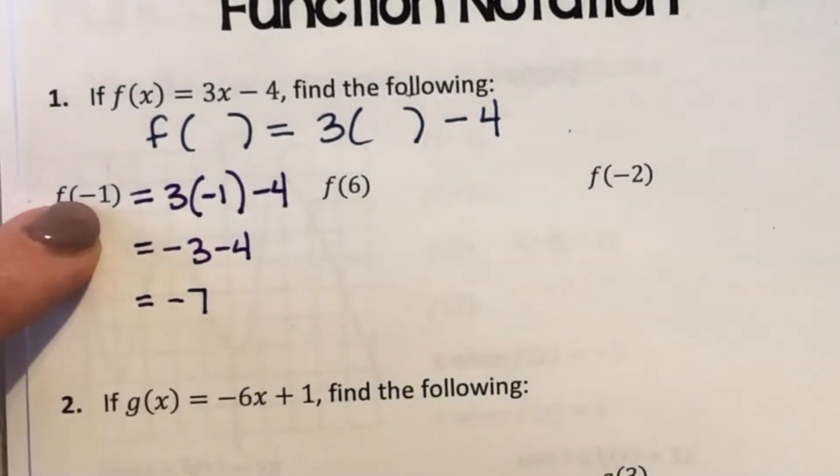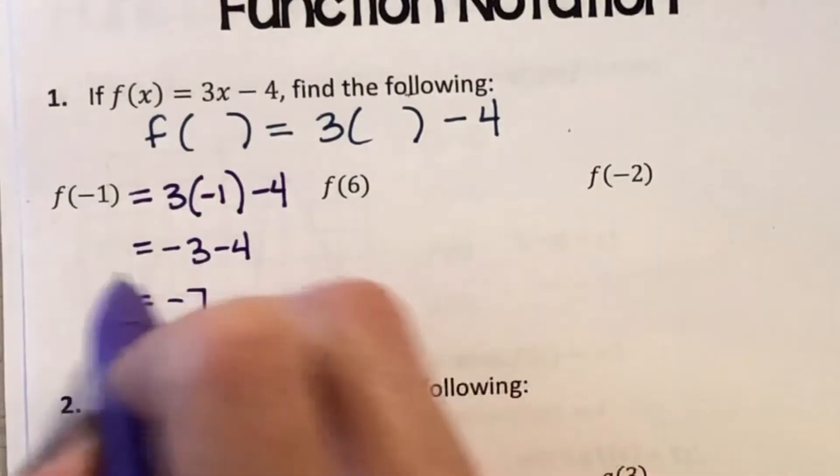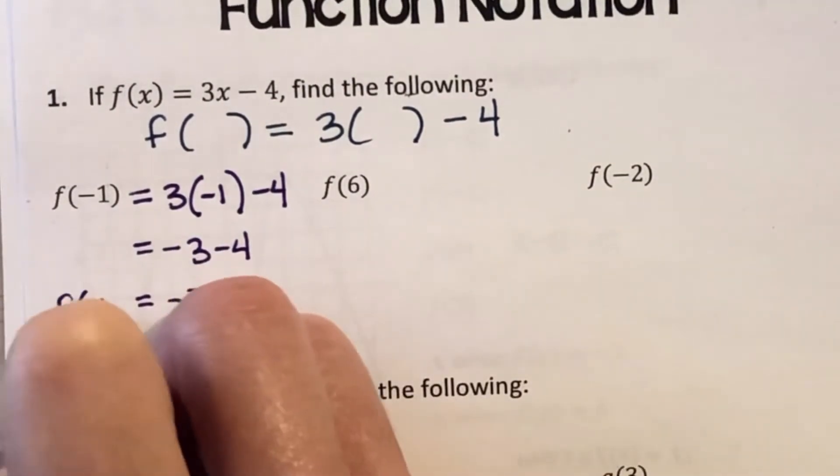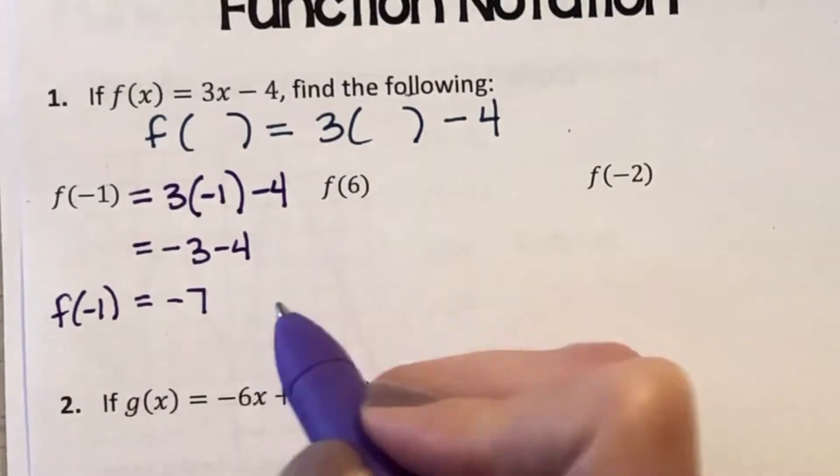So I pop in a negative 1, out pops a negative 7. So f of negative 1 equals negative 7. What does that look like as a coordinate point?